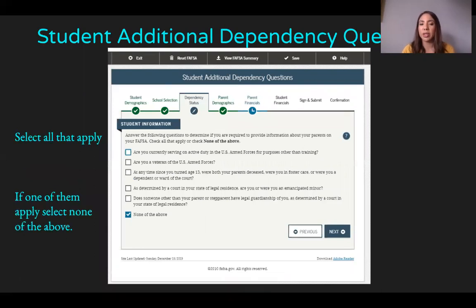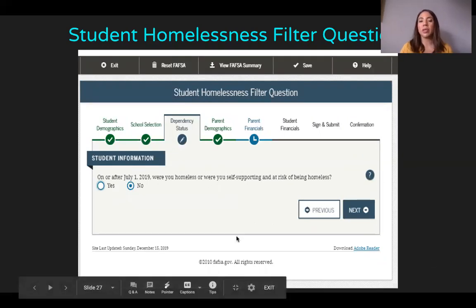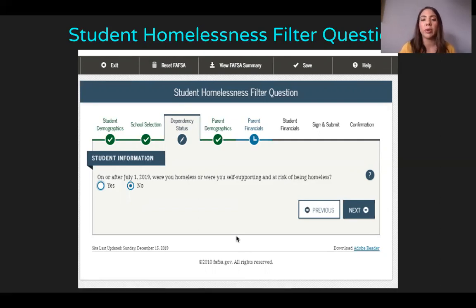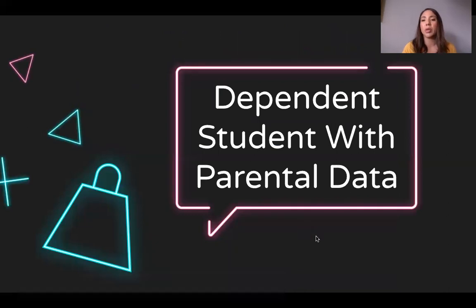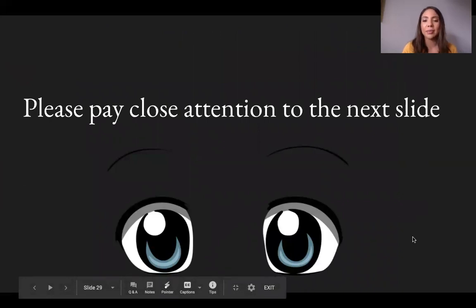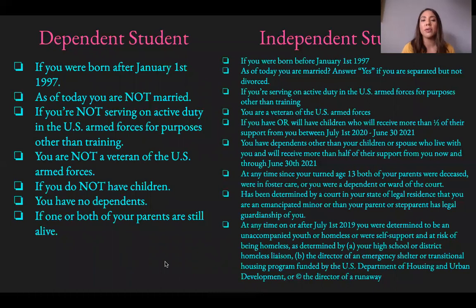Under Student Additional Dependency Questions, select all that apply to you. If one applies, select it; if none apply, select 'None of the Above.' These questions help determine whether you are required to provide information about your parents on your FAFSA. Also answer the student homelessness question: on or after July 1st, 2019, were you homeless or self-supporting and at risk of being homeless? Click Next to continue.